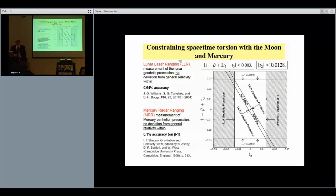This is the first constraint we put. We used the measurement of the geodetic precession of the Moon done with lunar laser ranging with 0.64 percent accuracy and the Mercury radar ranging measurements which have made possible the measurement of the Mercury perihelion precession with one per mil accuracy. In this plane we put constraints on the t2 parameter and the t3 parameter. With lunar laser ranging we exclude these values, and with the combination of the two measurements we exclude all the region outside this one labeled as allowed region. This is a constraint on the two parameters at the level of percent or less than a percent.